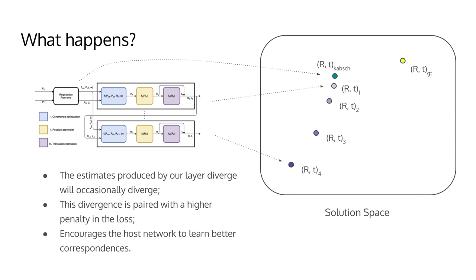This divergence is paired with a higher penalty in the loss used to supervise training, conditioning the network to avoid the set of matches it provided. This ends up being beneficial to the training of the host network, encouraging it to learn better correspondences. And as we already established, better correspondences yield better poses.